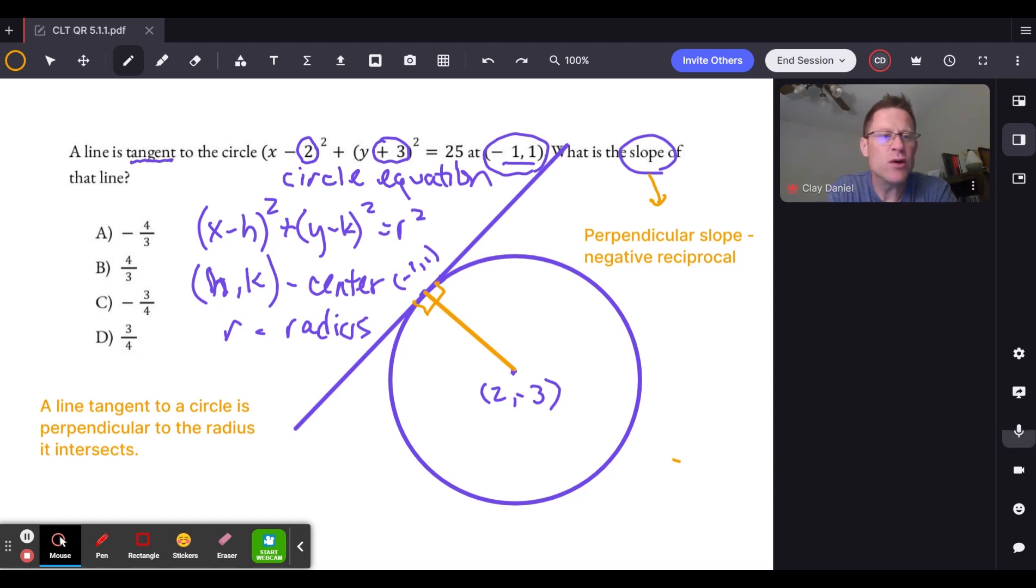For that we're going to use the old rise over run formula. You may recall slope is often referred to as m, and that's going to be one y-coordinate minus the other: 1 minus negative 3 is 1 plus 3, over the x-coordinate subtracted: negative 1 minus 2, and that comes out as negative—4 over negative 3 is 4/3. That is the slope of this line right there.